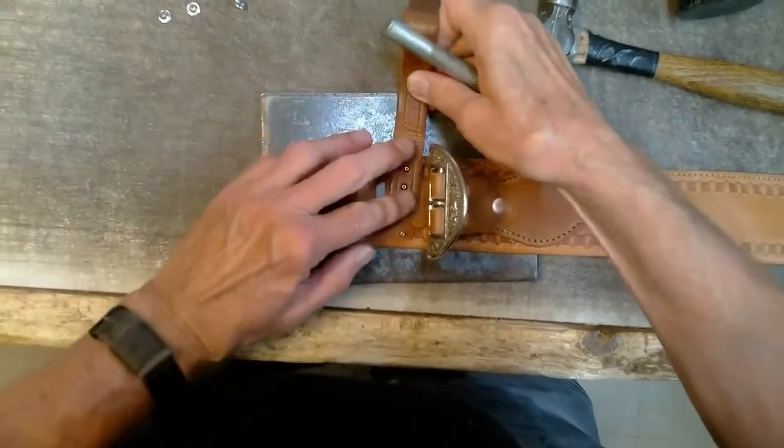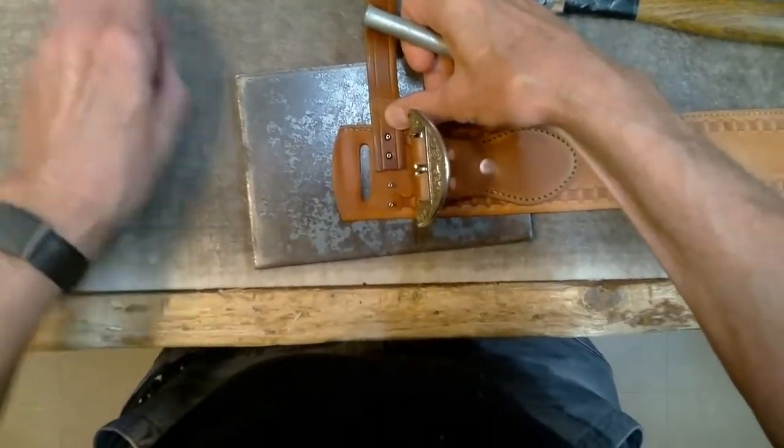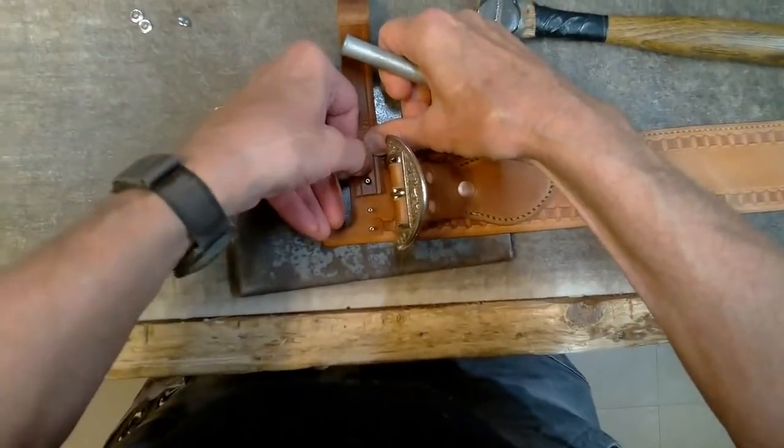After the edges of the money belt have been dressed, the keeper can be riveted on. The keeper is optional, but many customers prefer it.